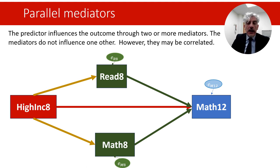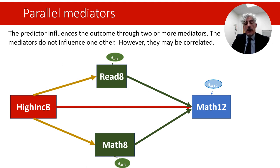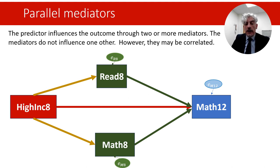Another common scenario in mediation is when parallel mediators are supposed. In this scenario, the predictor influences the outcome through two or more mediators that are not assumed to closely influence each other — though they can be correlated. This scenario is particularly useful for testing the relative size of indirect effects across different putative mechanisms. For example, the effect of high family income on grade 12 math scores may be mediated by both grade 8 reading scores and grade 8 math scores.